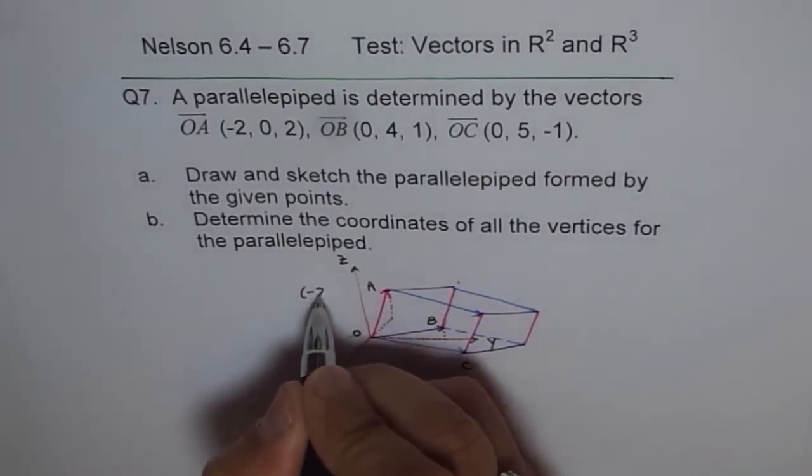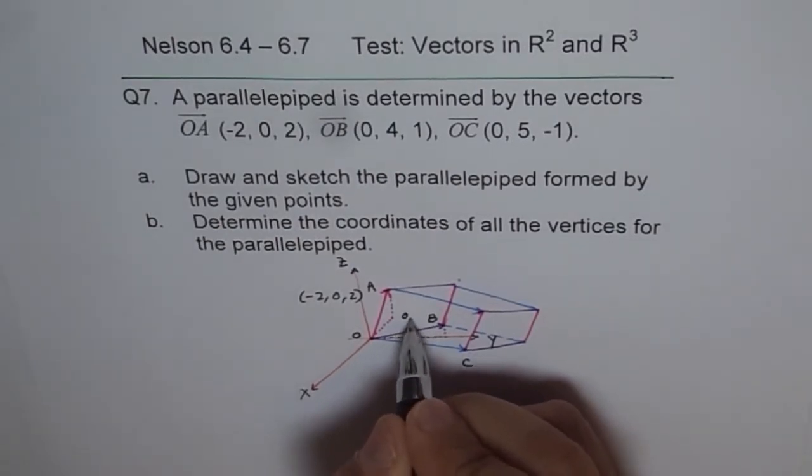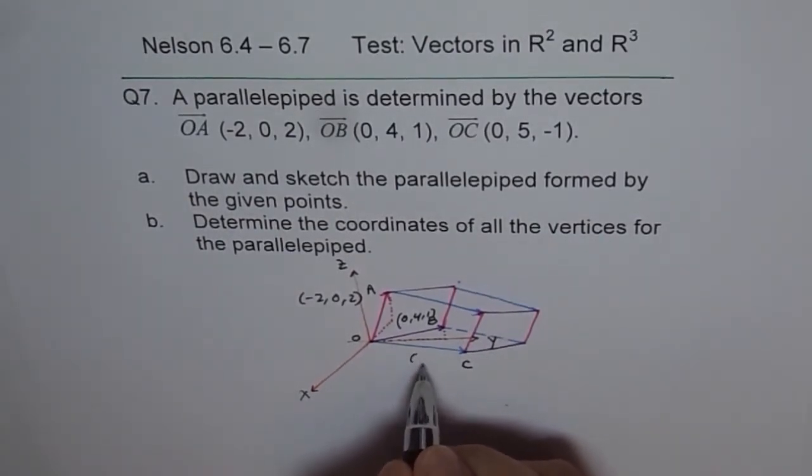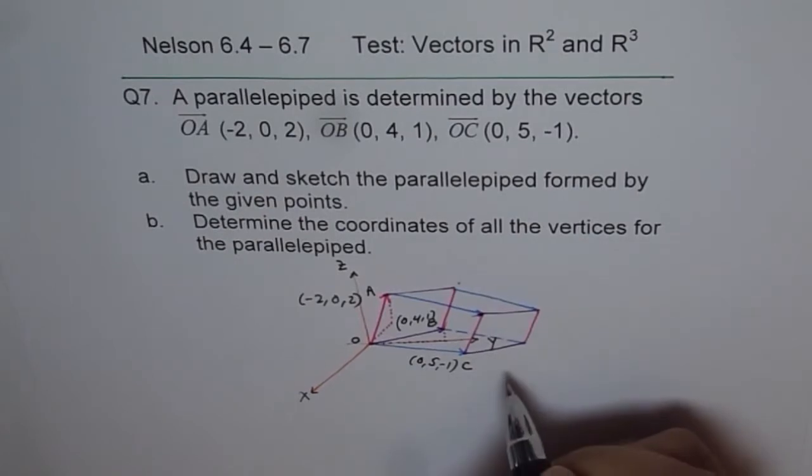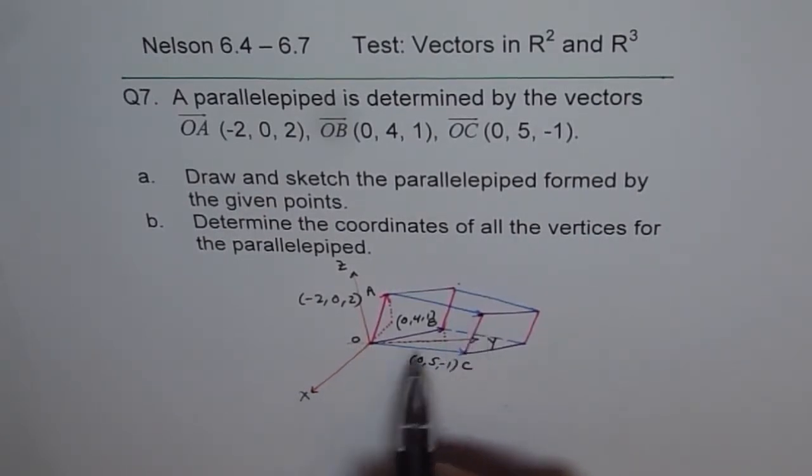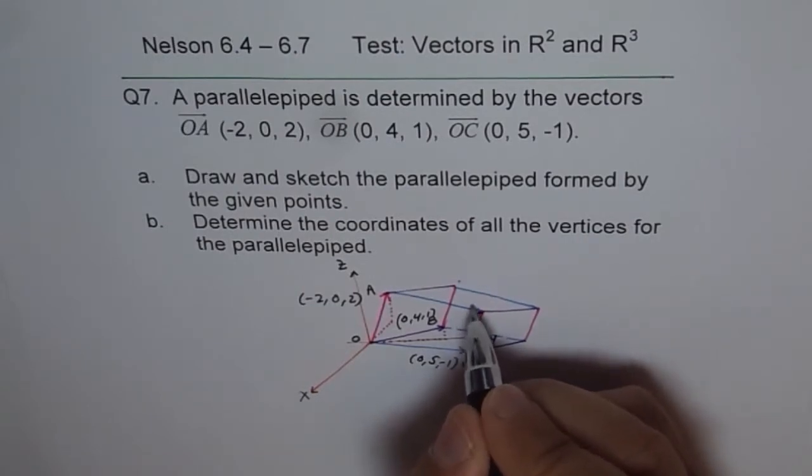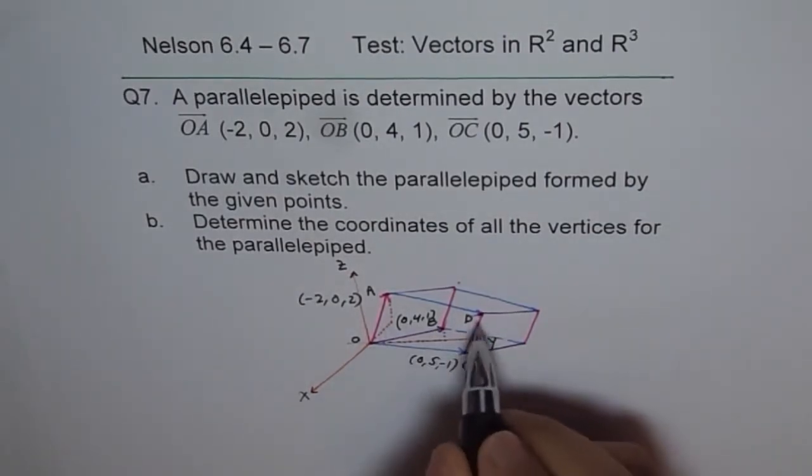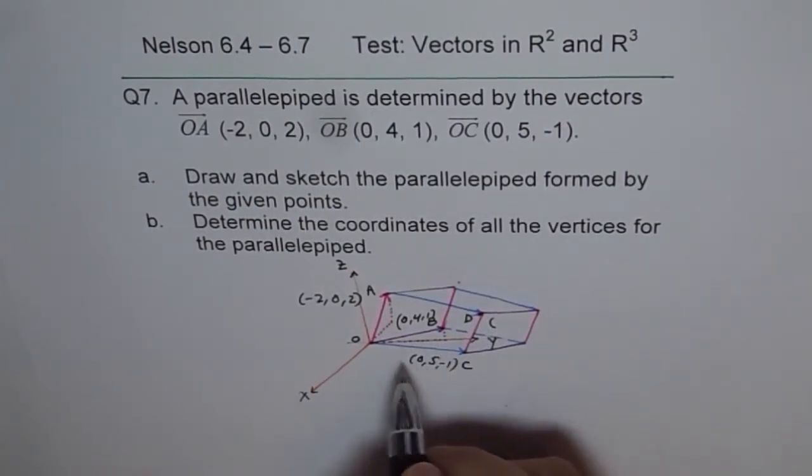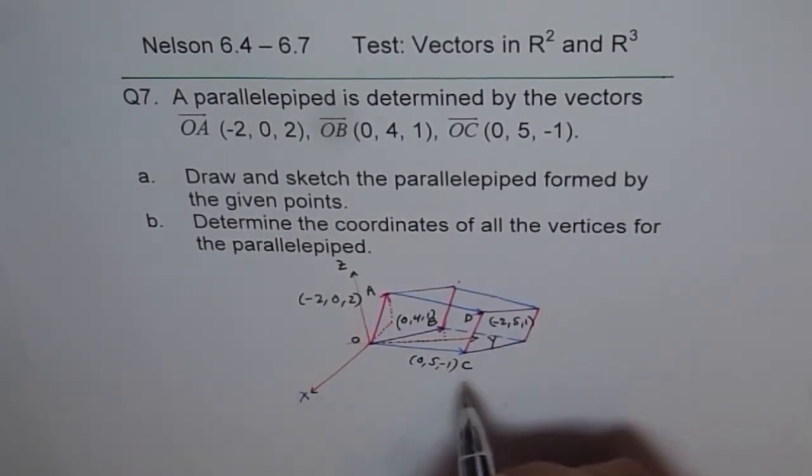OA is point (-2, 0, 2). OB is (0, 4, 1). And OC is (0, 5, -1). Now, if I have to give coordinates of this point, that is OC plus OA. OC plus OA gives me this point. So I can call this point D. For D, I have to add OC and OA to get to D. So I can write D as: 0 and -2 will be -2, 5 and 0 will be 5, and -1 and 2 will be 1. So I get D.